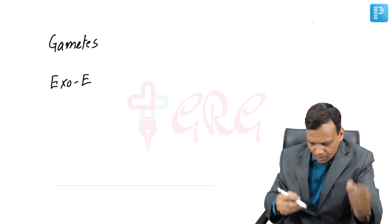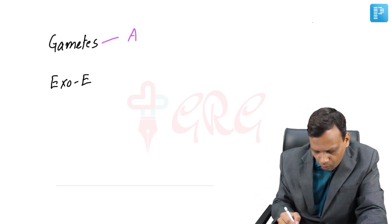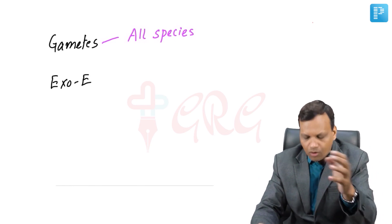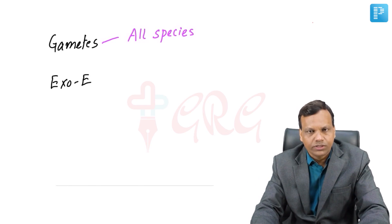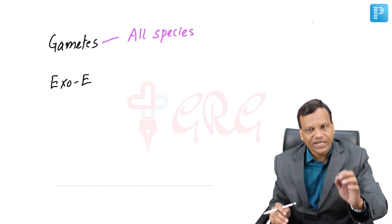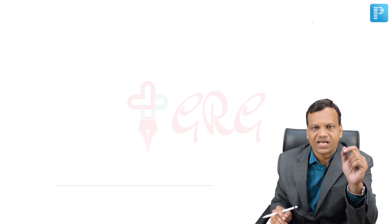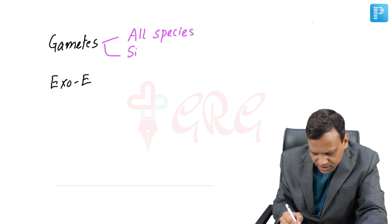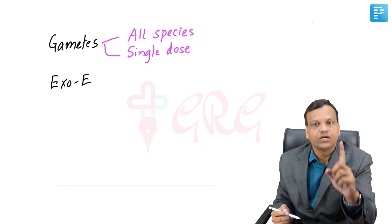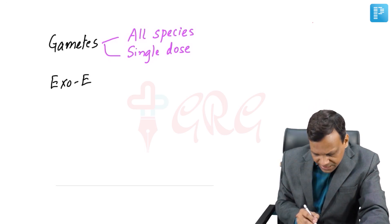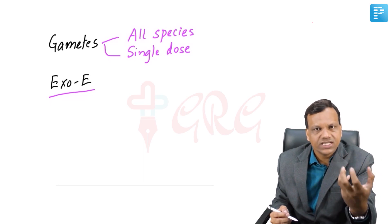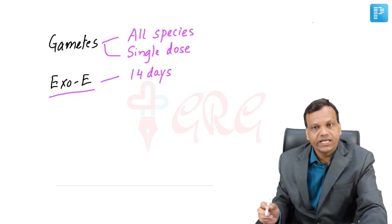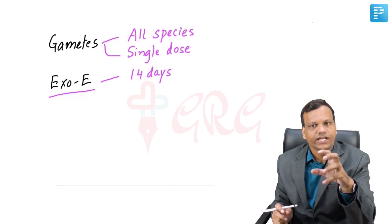Special points: primaquine can kill the gametes of all species of Plasmodium — vivax, falciparum, ovale, and malariae — whereas chloroquine and quinine can only kill the gametes of Plasmodium vivax. For killing gametes, a single dose of primaquine is sufficient. For killing hypnozoites (exo-erythrocytic stage), primaquine must be given for 14 days (2 weeks).